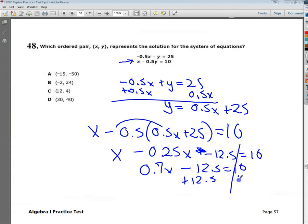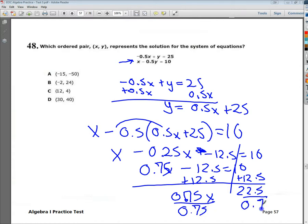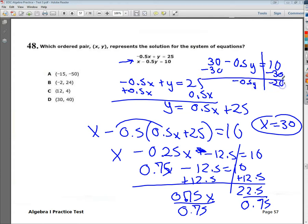So 0.75x equals 22.5, divided by 0.75. So I do 22.5 divided by 0.75, and I'm getting an x value of 30. To get my y value, I simply go back in and plug it into one of them. I'm going to plug it into the bottom one. So subtract 30 from both sides. I end up with negative 20 here. I divide by negative 0.5. So my y value is 40. So I get 30 and 40 again. That's the third way.